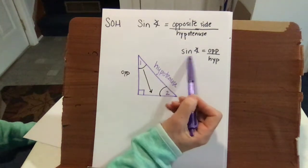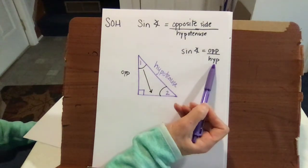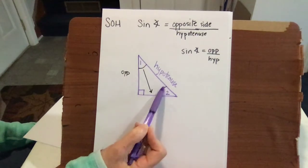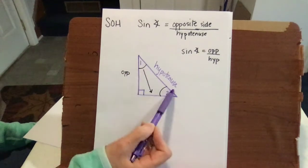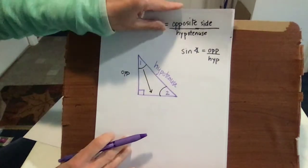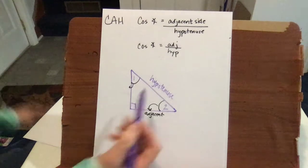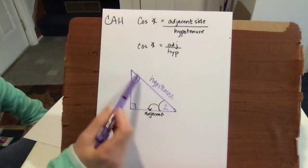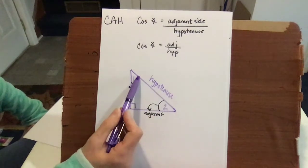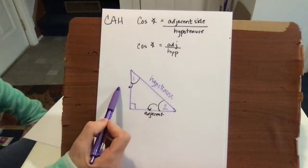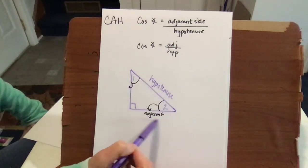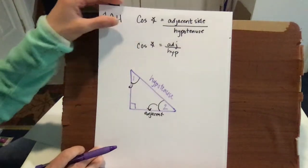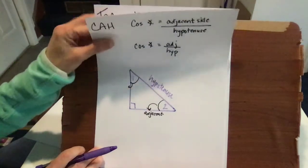As a quick review: sine of any angle is the opposite over the hypotenuse. If you're at angle 1, the opposite side would be here; if you're at angle 2, the opposite side would be here. Hypotenuse is always the same. For cosine, the cosine of an angle is adjacent over hypotenuse — hypotenuse is always opposite your 90. So if you're at angle 1, the adjacent side would be here, and if you're at angle 2, your adjacent side would be here. It all depends on what angle you have as to whether you use sine, cosine, or tangent.